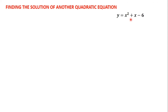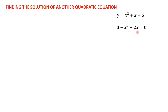Let's go back to our example. Let's say we draw the graph of the function y = x² + x - 6 on the graph sheet. We are then asked to use the graph to find the solution of the equation 3 - x² - 2x = 0. As you can clearly see, the quadratic expression in the function is x² + x - 6, while the quadratic expression in the equation is 3 - x² - 2x. They are different.